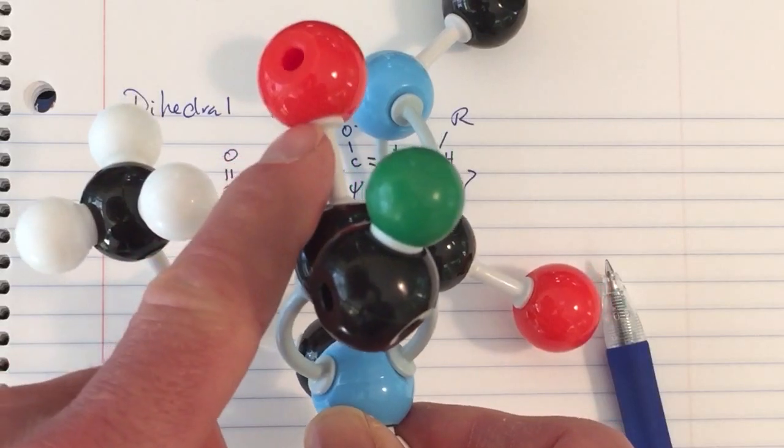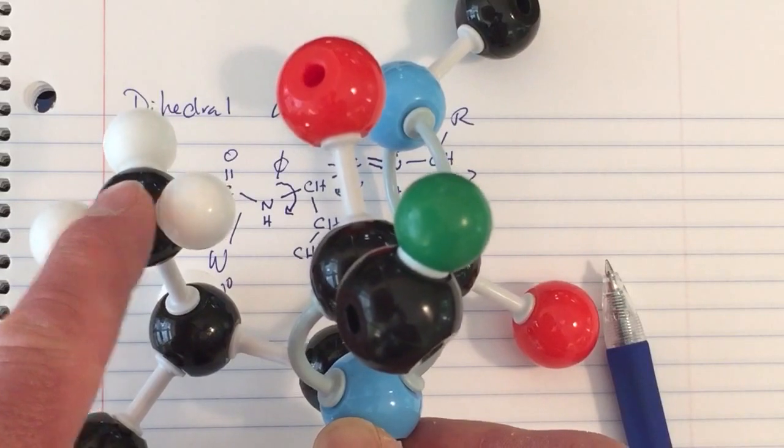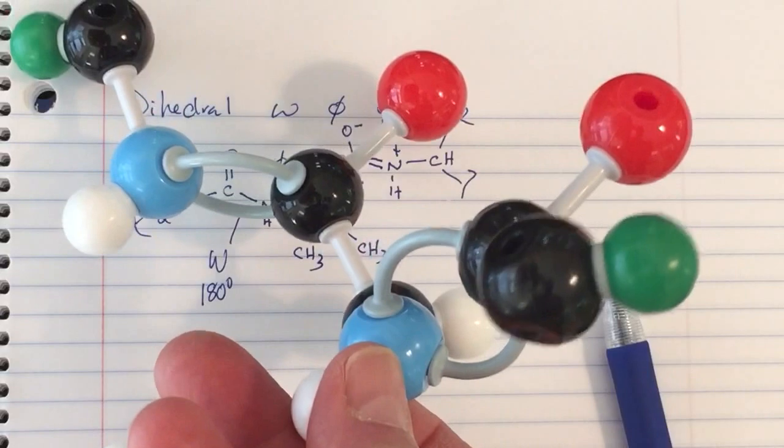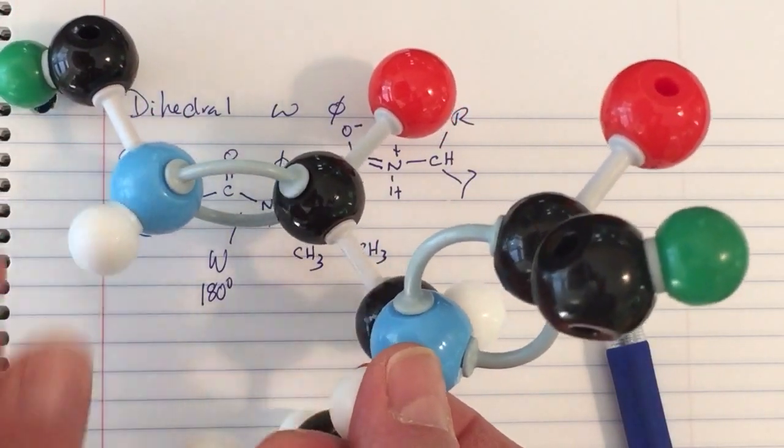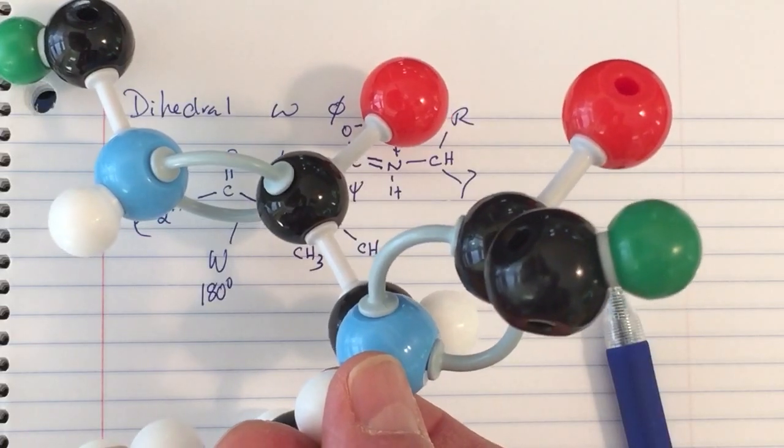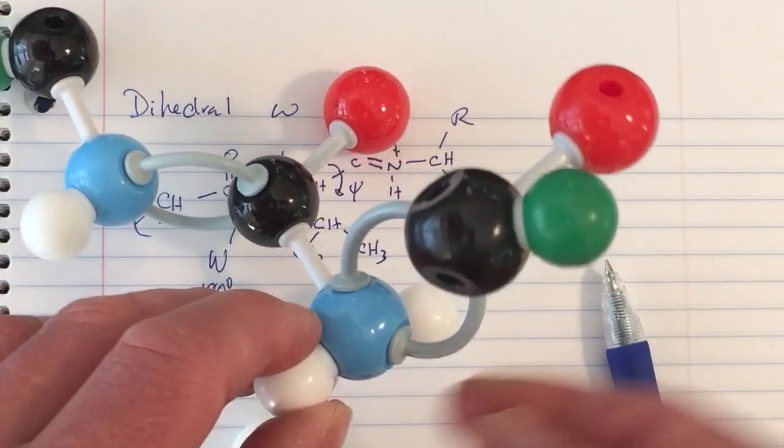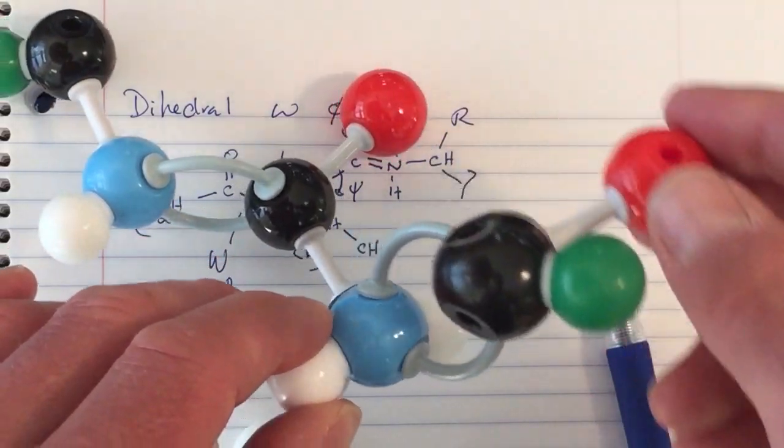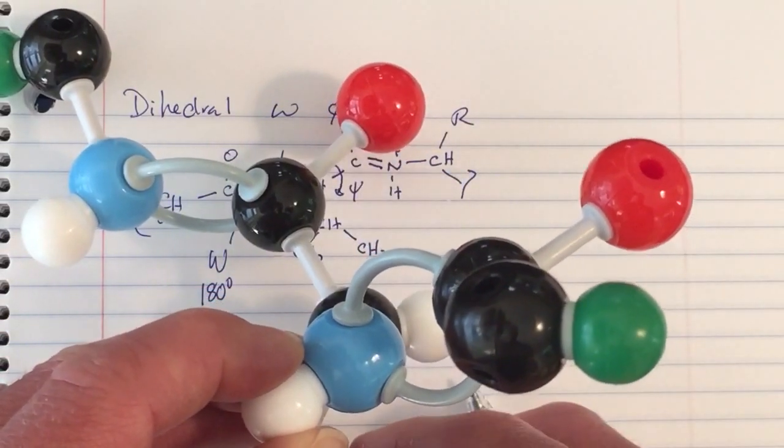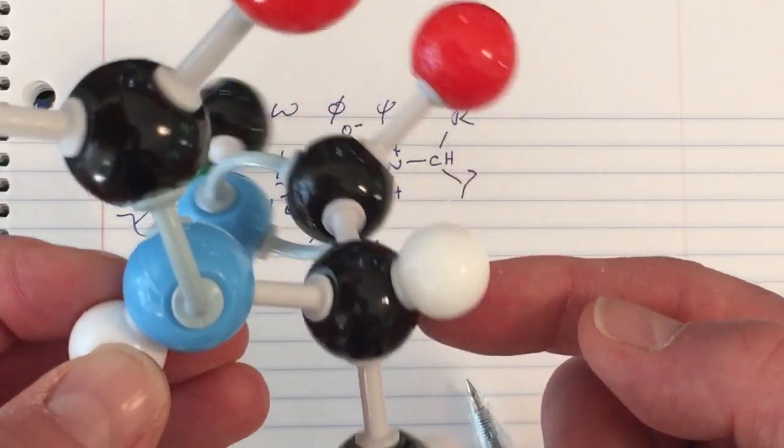For positive values of Phi, it's very likely for the carbonyl group in the front to collide with the side chain in the back. For this reason, most amino acids adopt negative values of Phi. Glycine, with its very small side chain, can adopt positive values of Phi, but for all other amino acid residues, there's just a lot more room for this carbonyl group if we adopt negative values of Phi.